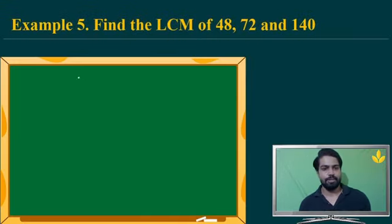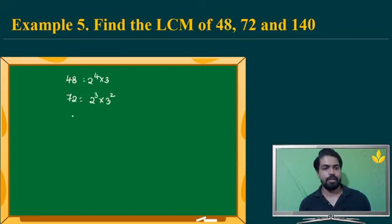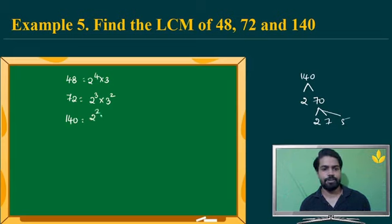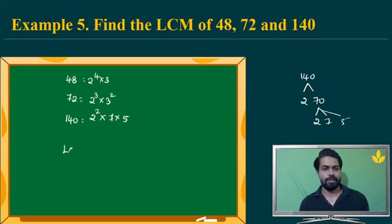Now let's talk about LCM — it is exactly opposite to HCF. For example, take 48, 72, and 140. We write 48 = 2⁴ × 3¹, and 72 = 2³ × 3², and 140 = 2² × 5¹ × 7¹. For LCM, we take the highest power of each prime present: 2⁴ × 3² × 5¹ × 7¹.